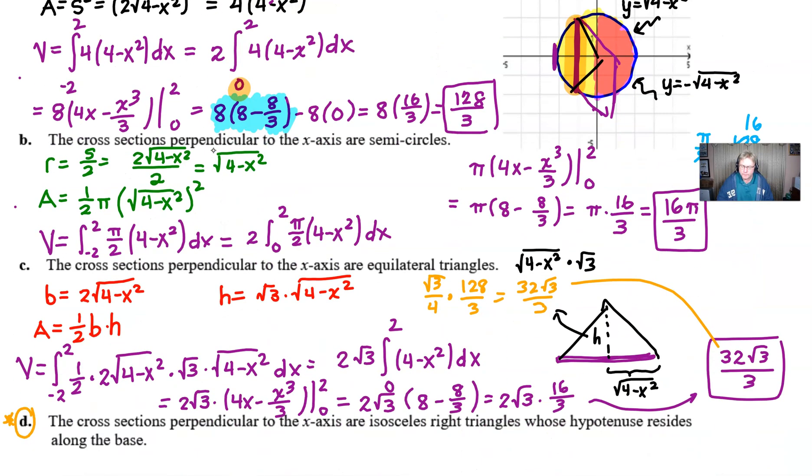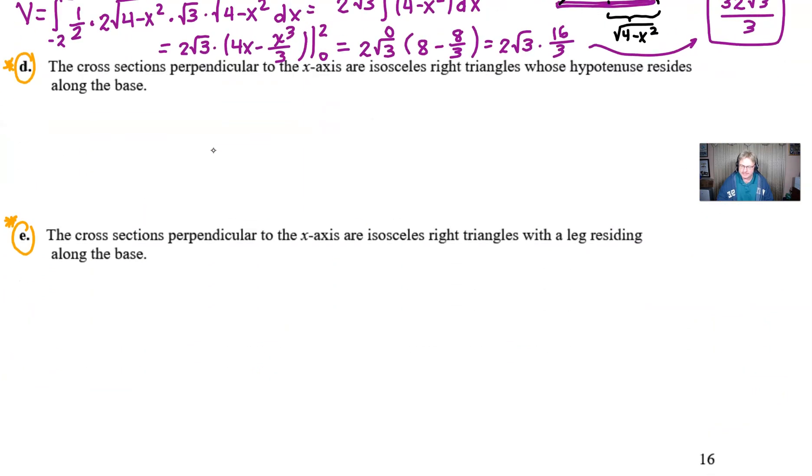Now, as we move to the problems that we're going to do in this video, parts D and E, we read, and it says, the cross sections are perpendicular to the x-axis, and they're isosceles right triangles, whose hypotenuse resides along the base.